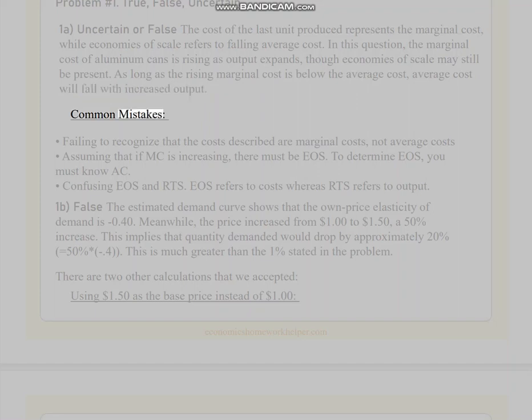Common Mistakes: Failing to recognize that the costs described are marginal costs, not average costs. Assuming that if MC is increasing, there must be EOS. To determine EOS, you must know AC. Confusing EOS and RTS. EOS refers to costs whereas RTS refers to output.